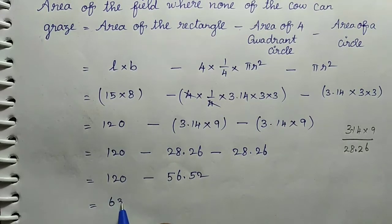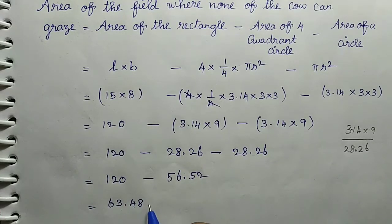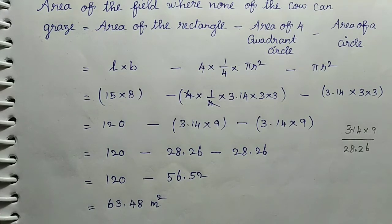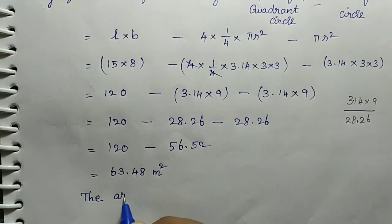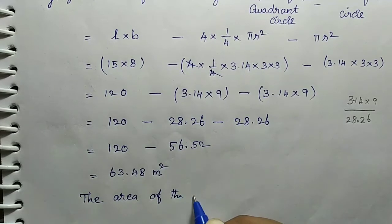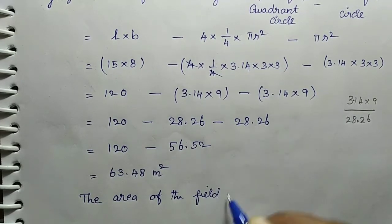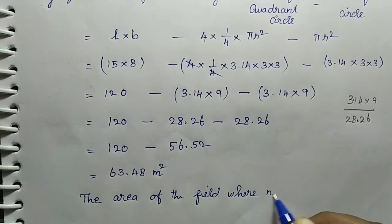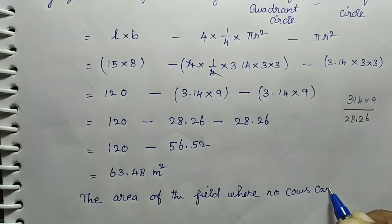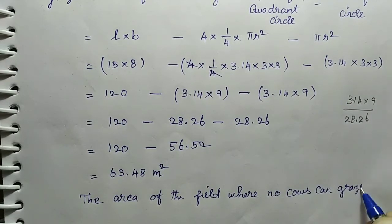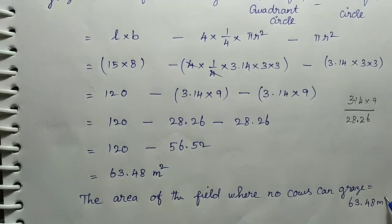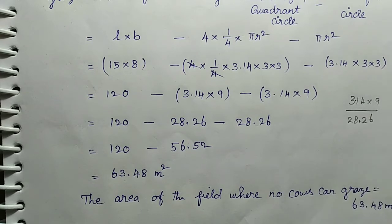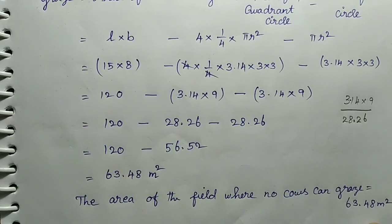120 minus 56.52 equals 63.48. The area of the field where no cows can graze equals 63.48 meters square.